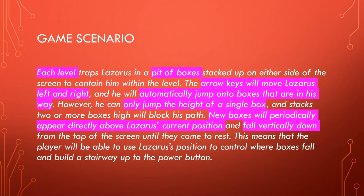In more detail about the game: each level traps Lazarus in a pit, with boxes stacked up on either side of the screen containing him within the level. The arrow keys will move Lazarus left and right, and he will automatically jump onto boxes that are in his way. However, he can only jump the height of a single box, and stacks of two or more boxes high will block his path.